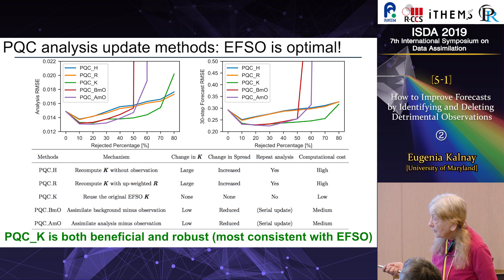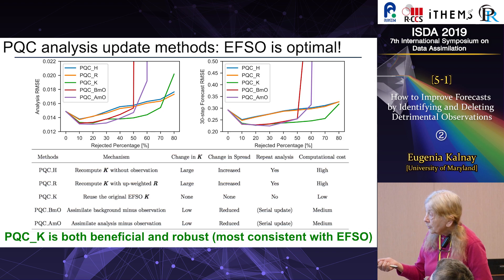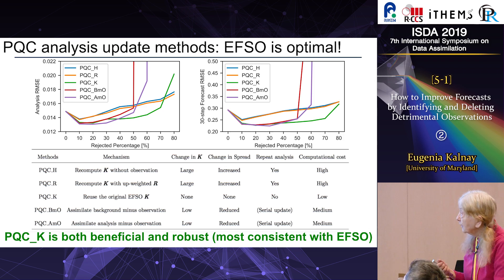One possibility is increasing R, the observation error covariance, for the detrimental observations — giving them less weight. Another is simply to reuse the result obtained with the original EFSO. We call this PQC K. There were also some other clever possibilities that he thought of.